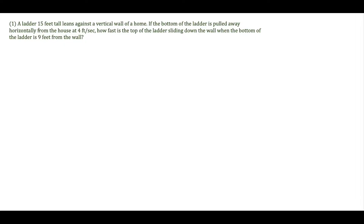For the first question, we have a ladder leaning against a wall and the ladder is 15 feet tall. We're told that if the bottom of the ladder is pulled away horizontally at a rate of 4 feet per second, how fast is the top of the ladder sliding down the wall when the ladder is 9 feet from the wall? For these questions, there's a lot to juggle in your mind, so the best thing you could do is draw this out.